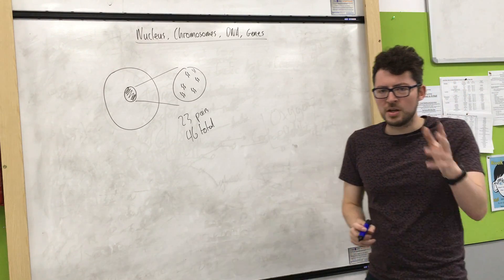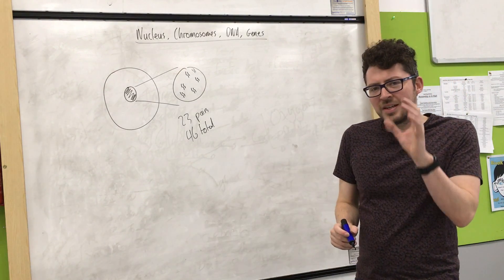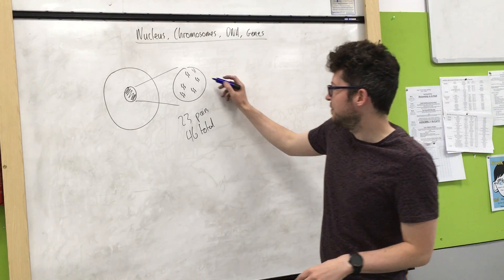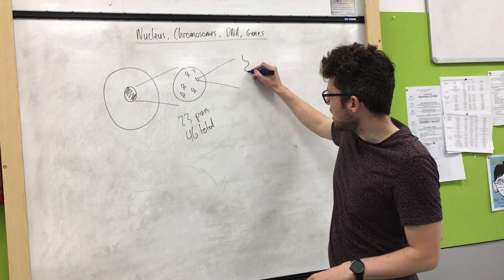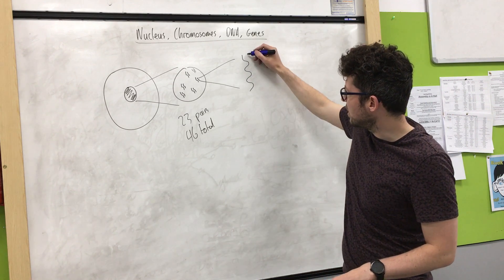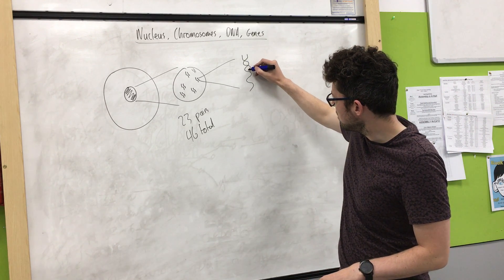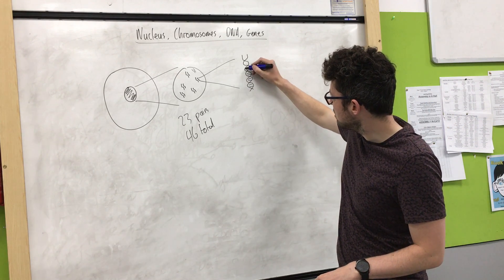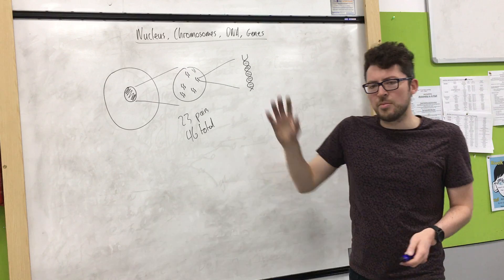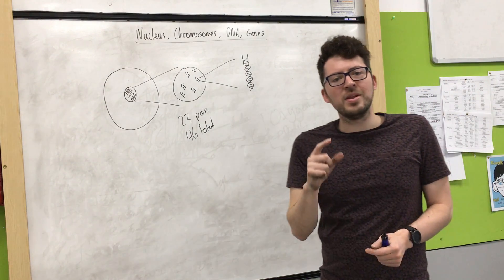Now, these chromosomes, if we zoom in on a chromosome, is made of a molecule called DNA. So if we zoom in on one chromosome, I could draw my DNA molecule like so. So this DNA molecule has something called a double helix structure.